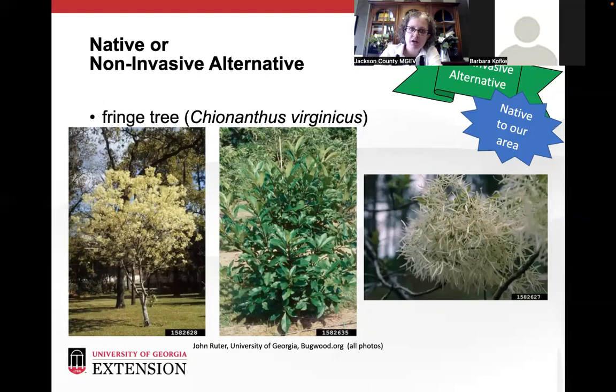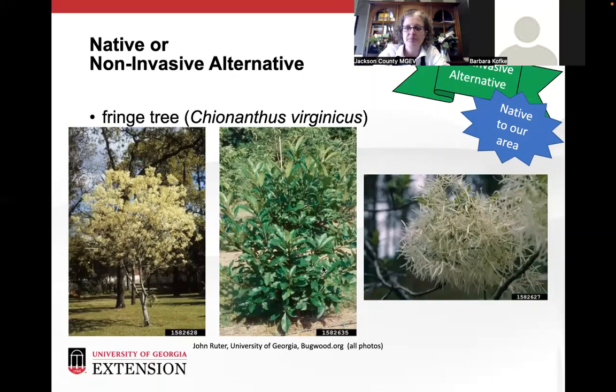A really neat native alternative to the mimosa is the fringe tree, Chionanthus virginicus — a small tree or shrub. It blooms in a crazy mess of fringe and fluff. The rest of the growing season it has nice large leaves on it, and it is deciduous, losing its leaves in the fall.